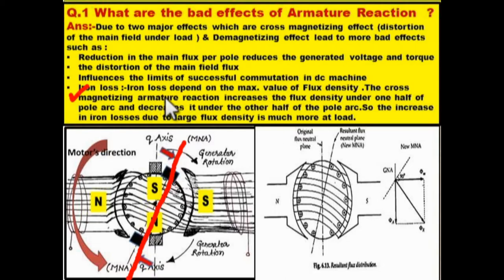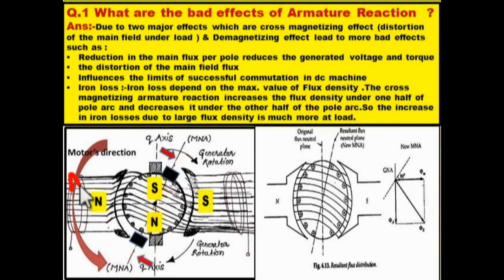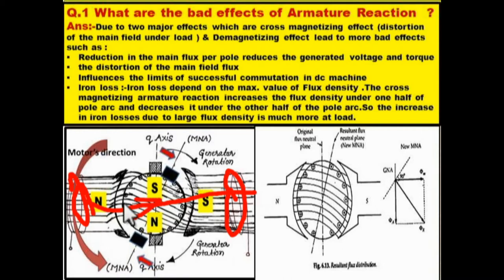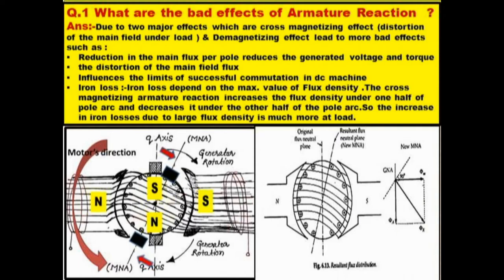Iron loss depends on the maximum value of flux density. The cross-magnetizing armature reaction increases the flux density under one half of the pole and decreases it under the other half. So the increase in iron losses due to large flux density is much more at load. At no load, only field current is present and only field flux is produced. But whenever there is load, current flows in the armature, armature reaction occurs because armature flux is produced, and the distribution changes.